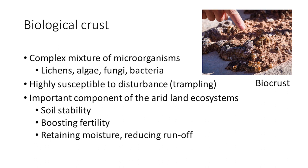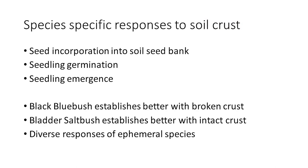Now, what's the deal with the biological crust? It's a complex mixture of microorganisms — you have lichens, algae, fungi, bacteria — you name it, it's there. They are highly susceptible to disturbance, particularly trampling, but they are a very important component of arid land systems. They provide soil stability, they boost fertility, they retain moisture, they increase infiltration and reduce runoff. And they affect the plants that are there — they can prevent some seeds from going into the soil seed bank, may favor other seeds to go in, and they can control seedling germination and seedling emergence. For example, we have data showing that bluebush establishes best when we remove the top soil, while bladder saltbush actually establishes better if the crust is intact.